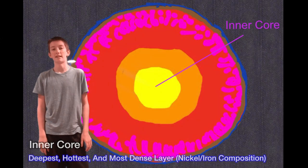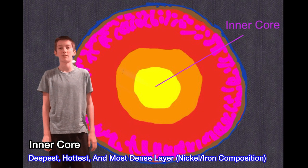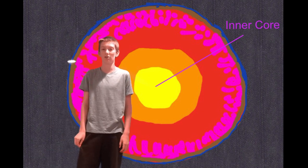First off, we have the inner core. It is the deepest and hottest layer and is also the most dense with the composition of nickel and iron. It is also about 1,200 kilometers thick.